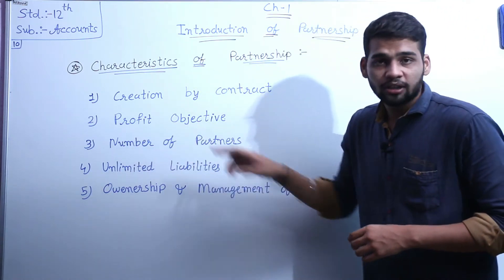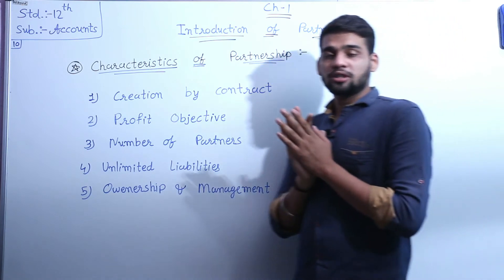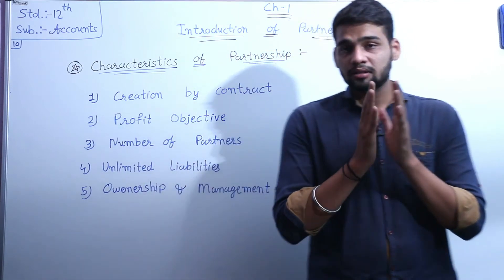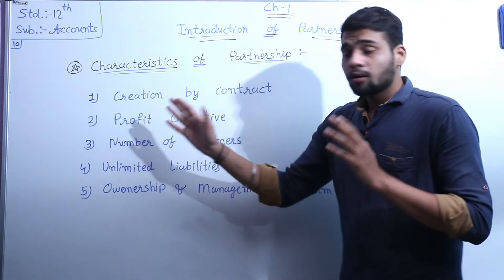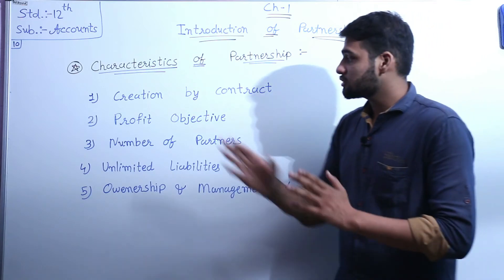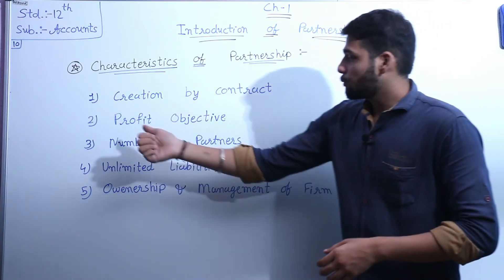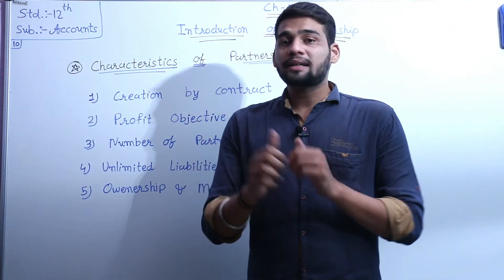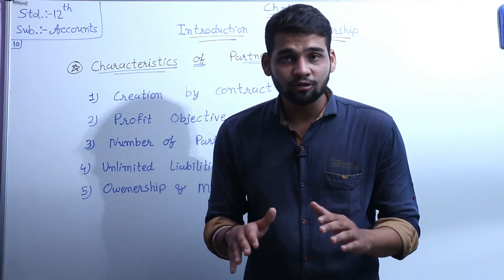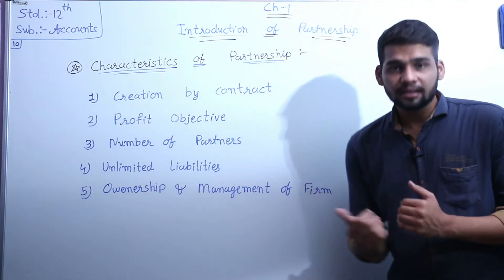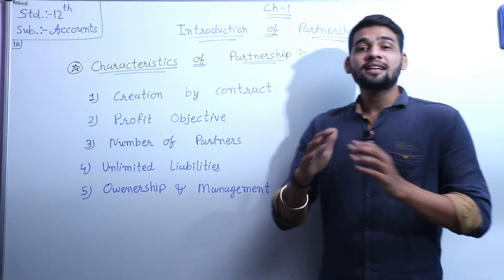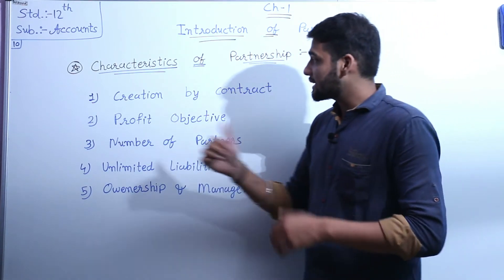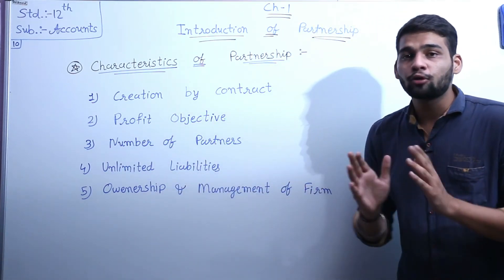The second characteristic of partnership is profit objective. Koi bhi partnership hoti hai, uska main object kya hota hai — to earn profit. Koi bhi partnership ka main object profit earn karna hota hai. Agar koi bhi partnership ka objective profit nahi hai toh wo partnership nahi hoti — wo charity otherwise trust ho jaata hai. So second characteristic of partnership is profit objective.